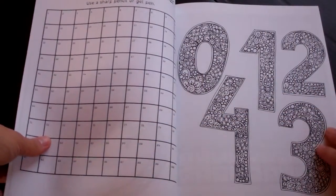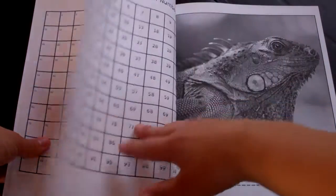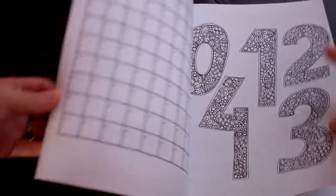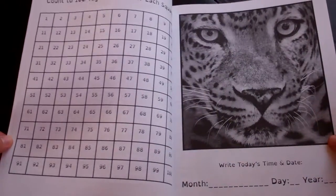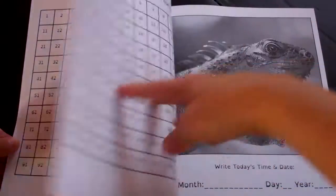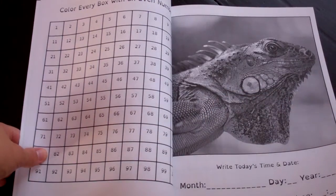Another 100 chart to color. This one says count and write every number. This one's count to 100 and color every number, and the first one was count to 100 together and color each square. So kind of getting used to the number chart.